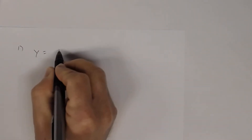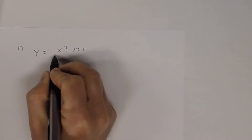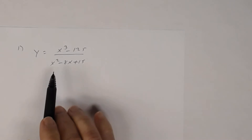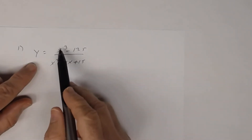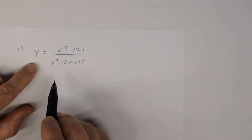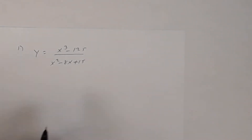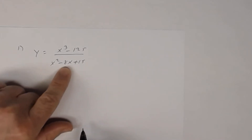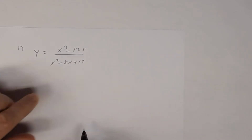In number 1, you have y equals x cubed minus 125 divided by x squared minus 8x plus 15. You're told it has an oblique asymptote, and you can see that's true because the degree of the numerator is 3 and the degree of the denominator is 2 — three is one more than two. To find it, you have to use long division because the denominator is not linear so synthetic division cannot be used.